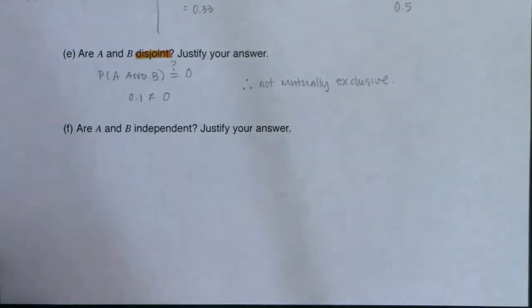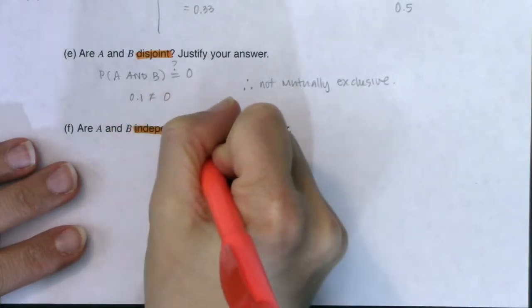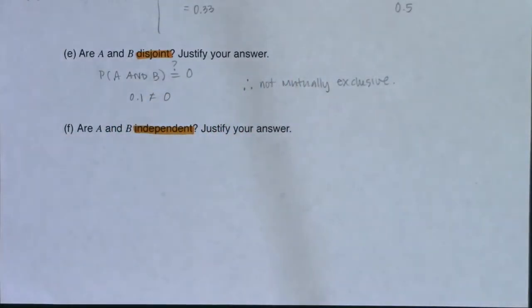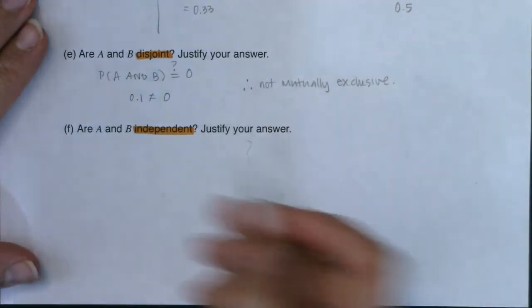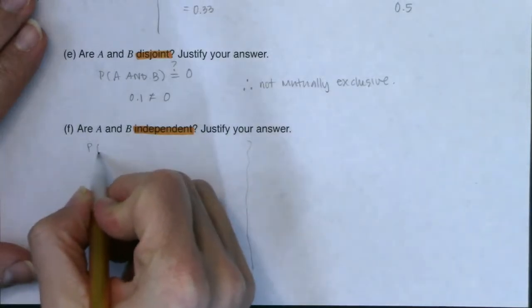part F asks, are they independent? All right, you have a couple of options. And given what we calculated, both of them are viable. So when it comes to this, to being independent, you can use, what's the problem?